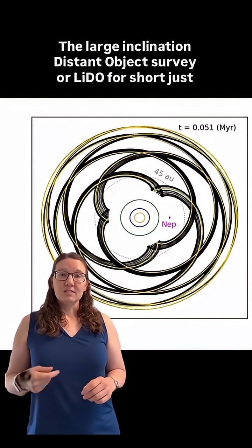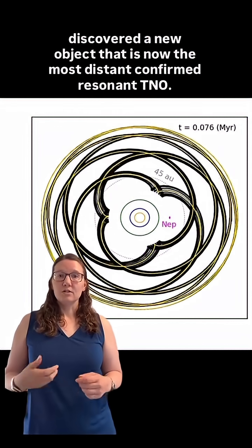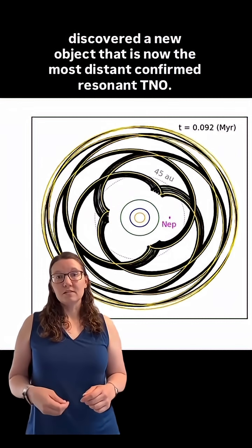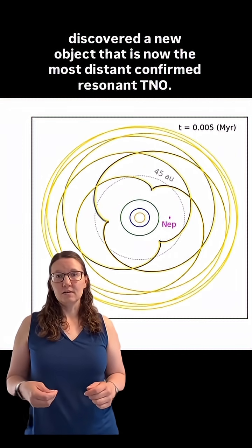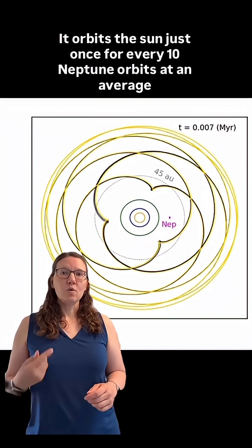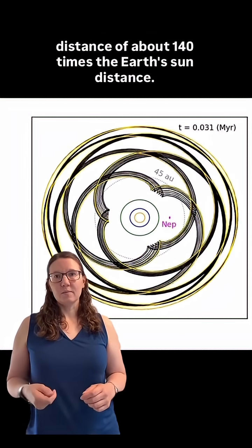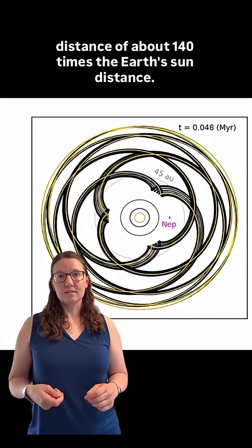The Large Inclination Distant Objects Survey, or LIDO for short, just discovered a new object that is now the most distant confirmed resonant TNO. It orbits the Sun just once for every 10 Neptune orbits, at an average distance of about 140 times the Earth-Sun distance.